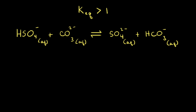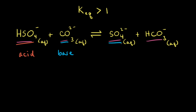Let's look at an example of a weak acid–weak base reaction. The hydrogen sulfate anion reacts with the carbonate anion to form the sulfate anion and the hydrogen carbonate anion. The hydrogen sulfate anion is donating its proton, so it must be the acid, and the carbonate anion is accepting a proton, so it must be the base. After the hydrogen sulfate anion donates its proton, it turns into the sulfate anion SO4²⁻. Therefore, the sulfate anion must be the conjugate base to HSO4⁻.